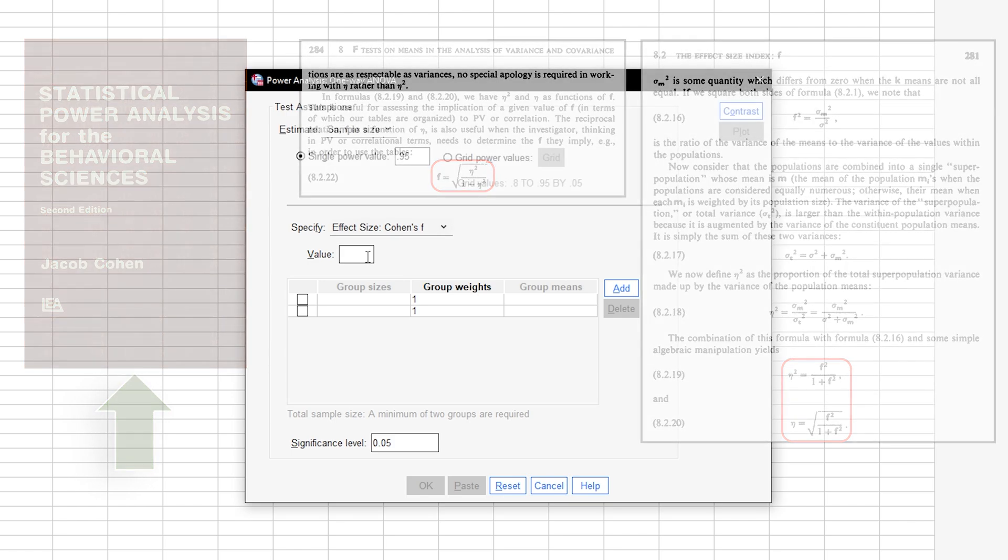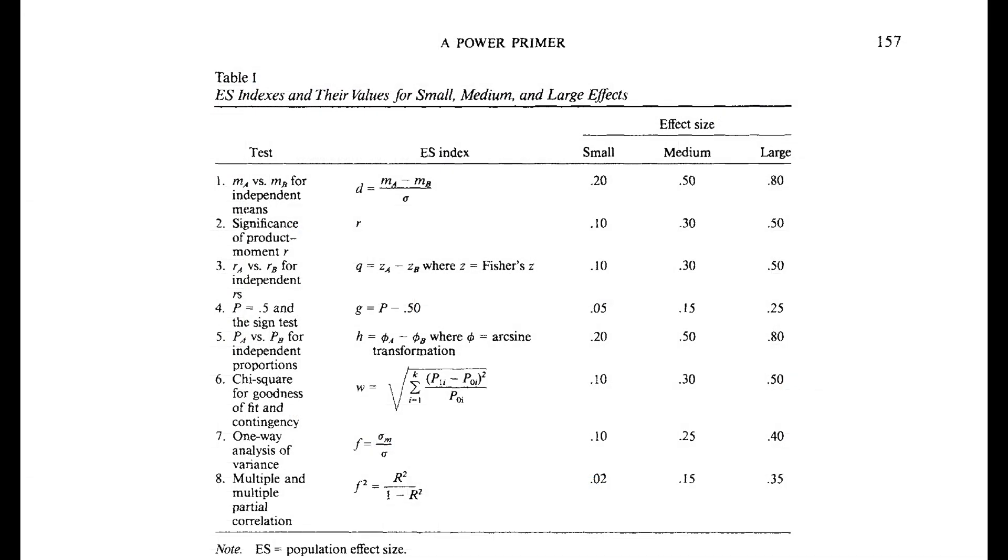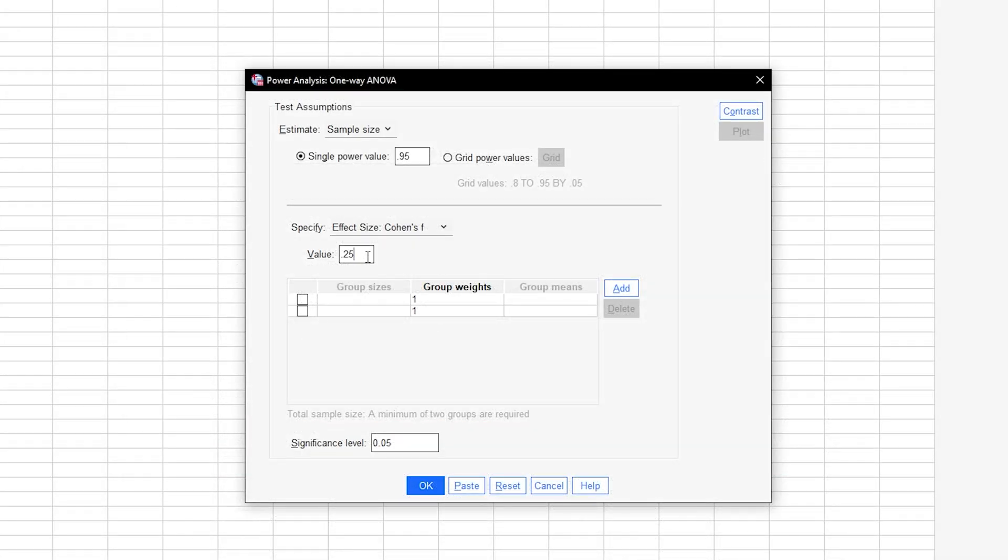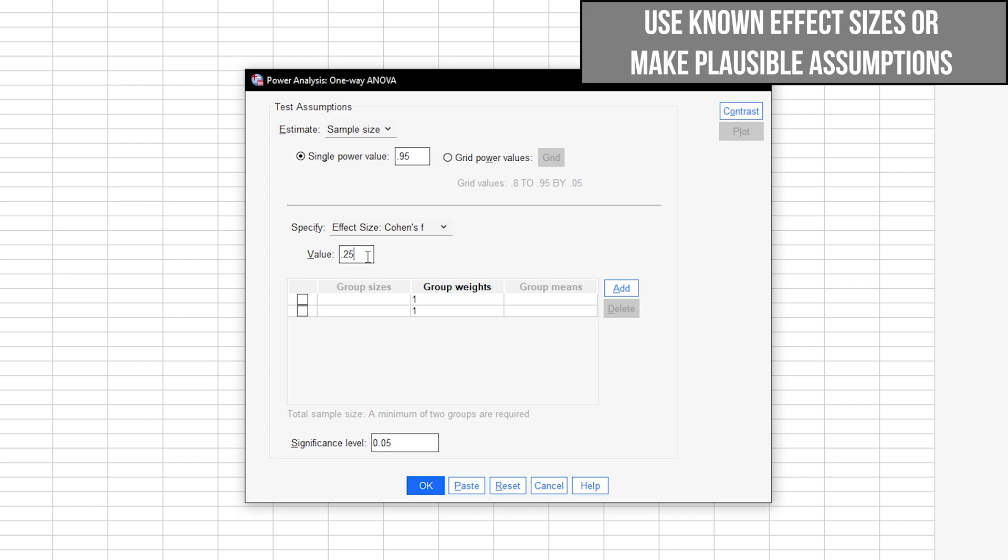The conventions for f for the behavioral sciences are 0.1, 0.25 and 0.4 for small, medium and large effect sizes, taken from Cohen 92a power primer. If you have research field specific thresholds though, or effect sizes from preliminary or comparable studies, use those instead.